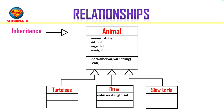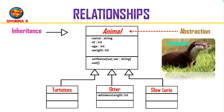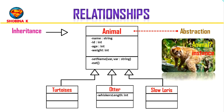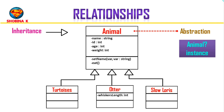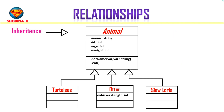In this scenario we also have what is called abstraction. The animal class is an abstract class because in our system, anytime we want to instantiate one of our classes, it's going to be tortoise, otter, or slow loris — we will not instantiate the animal class itself. The animal class is just a way to simplify things and keep the code DRY, so you don't repeat yourself. To show that this is an abstract class, we put the name in italics.